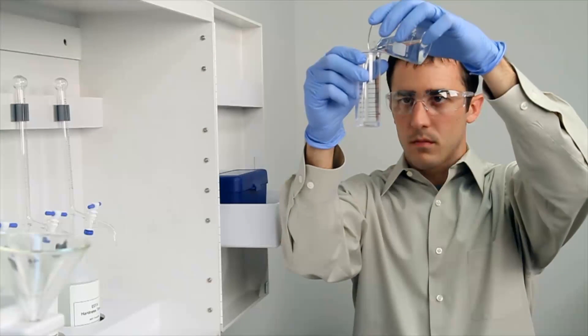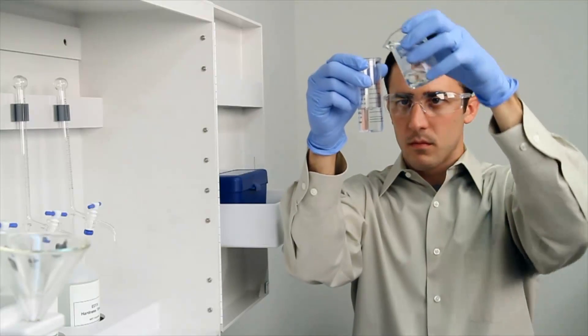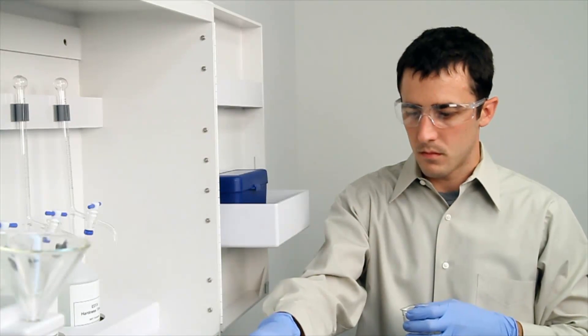To get an accurate sample size, you want to hold the vial close to eye level. Once you feel you have an accurate sample, place the vial on a level surface and bend down to eye level.